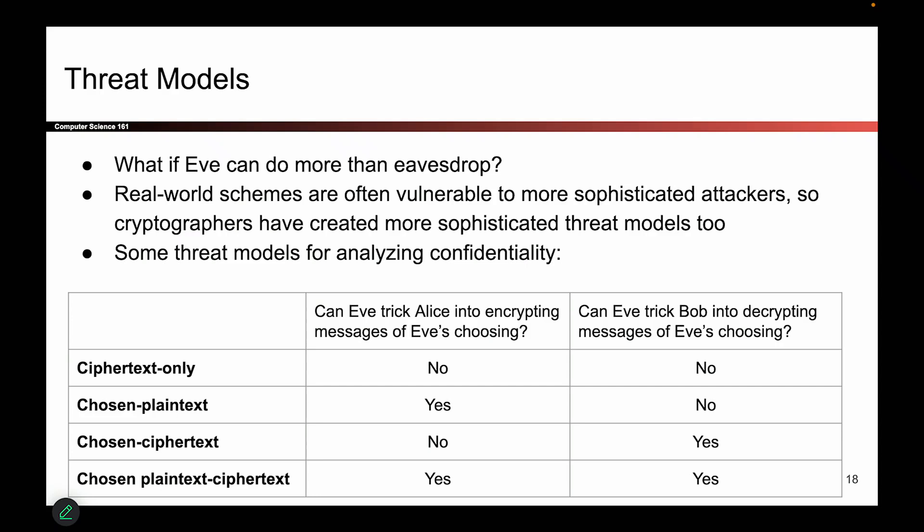Let's talk about threat models. So far we've talked about our villains Eve and Mallory. Eve is able to eavesdrop on messages, and Mallory is able to listen on messages and also change them, tamper with them. But those might not be the only things that Eve and Mallory can do — maybe they have more powers, and we have to develop new threat models to account for that.